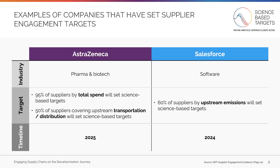To bring this guidance to life, this page covers two examples of companies who have set supplier engagement targets through the SBTi. AstraZeneca targets 95% of its suppliers by total spend, with a minimum of 50% of suppliers covering upstream transportation and distribution, having set science-based targets by 2025. And Salesforce targets 60% of its suppliers by upstream emissions, having set science-based targets by 2024.